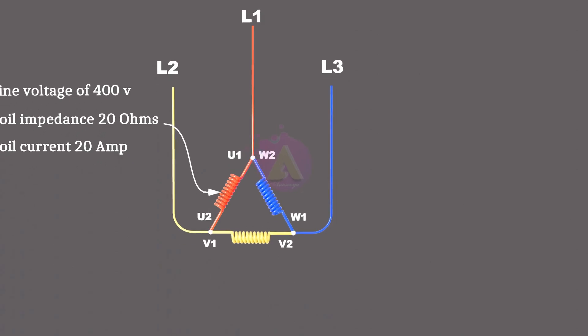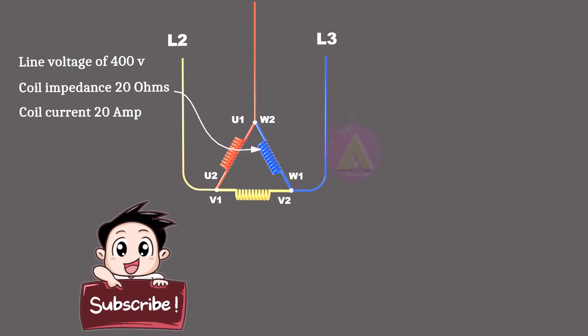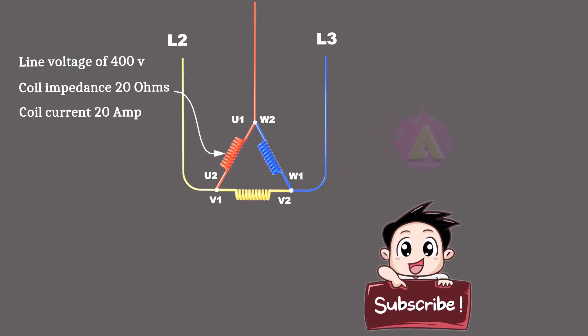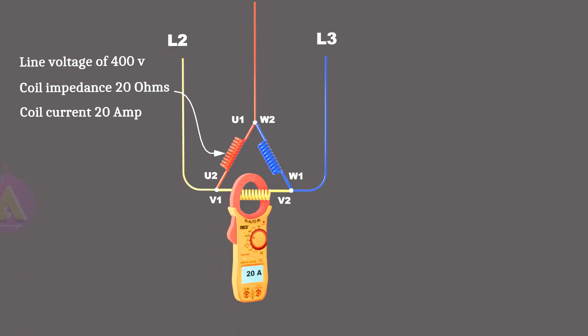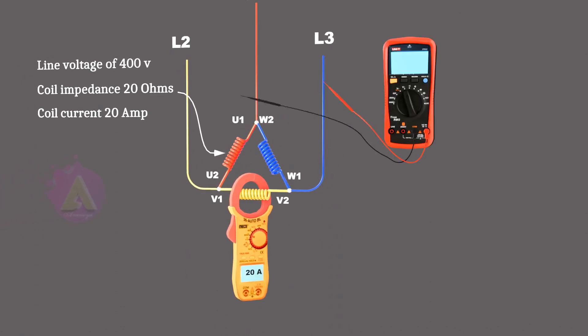Let's say each coil has a resistance or impedance from the alternating current of 20 ohms. That means we will get a current reading on the coil of 20 amps. We can calculate that: 400 volts divided by 20 ohms which is 20 amps.